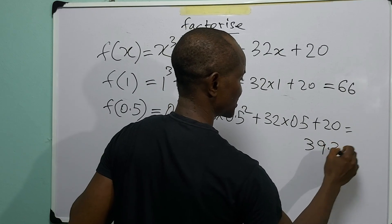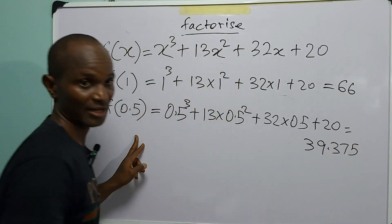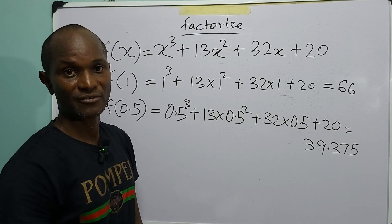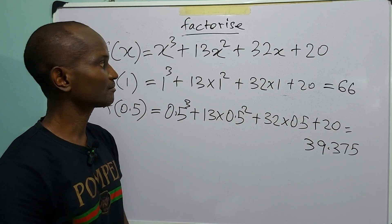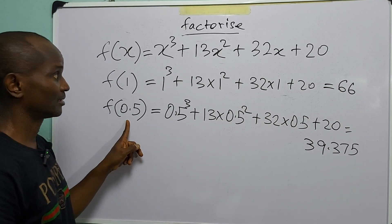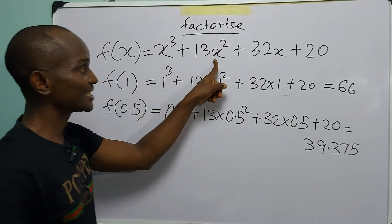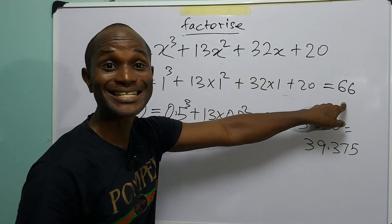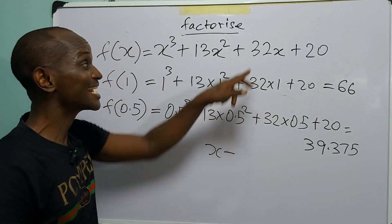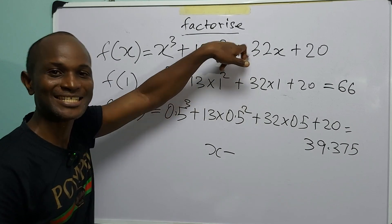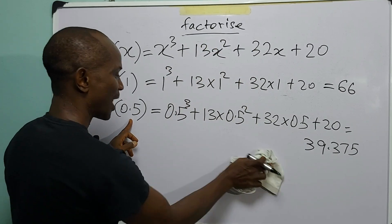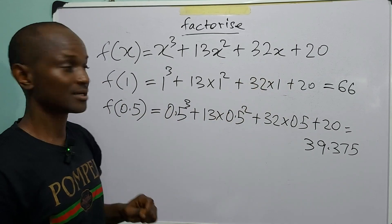Now there is a theorem in mathematics called the Factor Theorem. It states that if we are able to find a number that, when plugged into this expression, gives zero, then x minus that number is a factor of this expression. We tried 1 and got 66, and we tried 0.5 and got 39.375.